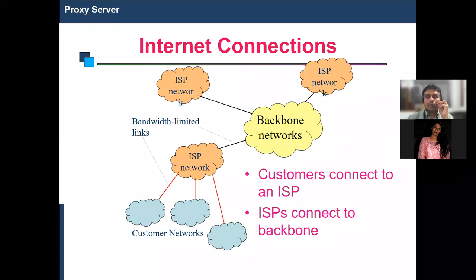Private ISPs include players like Sify, Jio, and many others, from which you can take a connection and use the internet. The ISP networks located in different parts of the country are all connected via a backbone network through which all transactions take place. Bandwidth depends on the type of connection — wired or wireless — and limits how your connection performs.